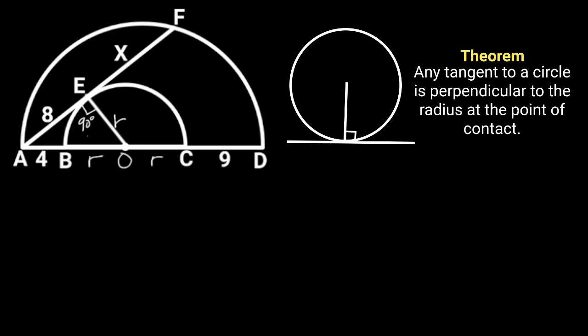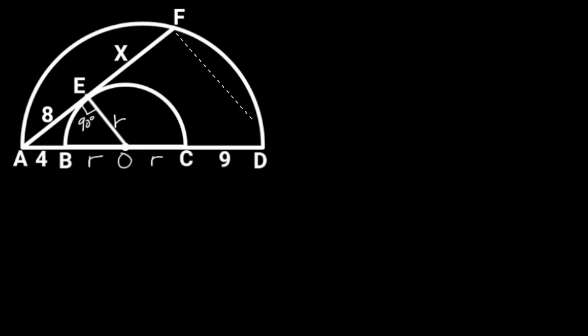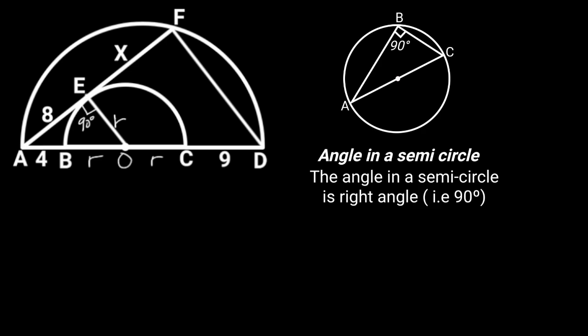Next, let's join F and D with a straight line. From the circle theorem of angle in a semicircle, it states that the angle in a semicircle is right angle, that is 90 degrees. From this theorem, it follows that angle AFD is equal to 90 degrees.